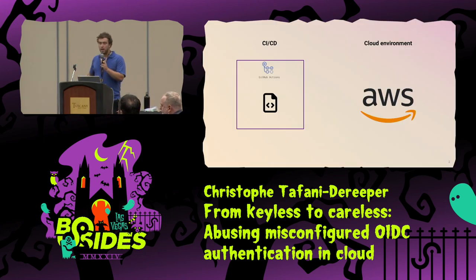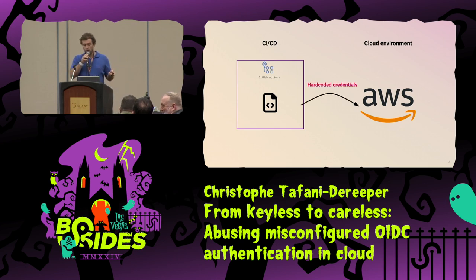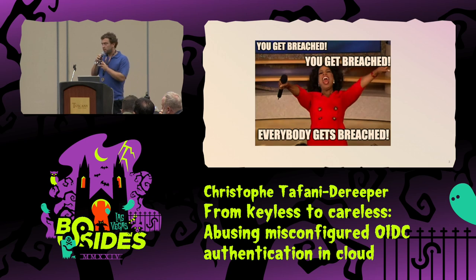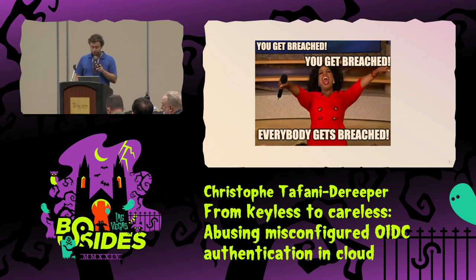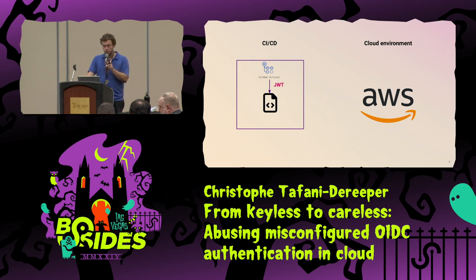We're going to talk about CI pipelines and how they authenticate to cloud environments. When you want to have things like Terraform deploying things to AWS, you have different ways of doing that. The easiest one is to have hard-coded credentials into your pipelines. The issue with that is that it's the cause for most cloud data breaches. So the next way is using a JSON web token, a JWT that your CI platform gives you. For GitHub Actions, it passes it to your pipeline, and then you can exchange this for cloud credentials.